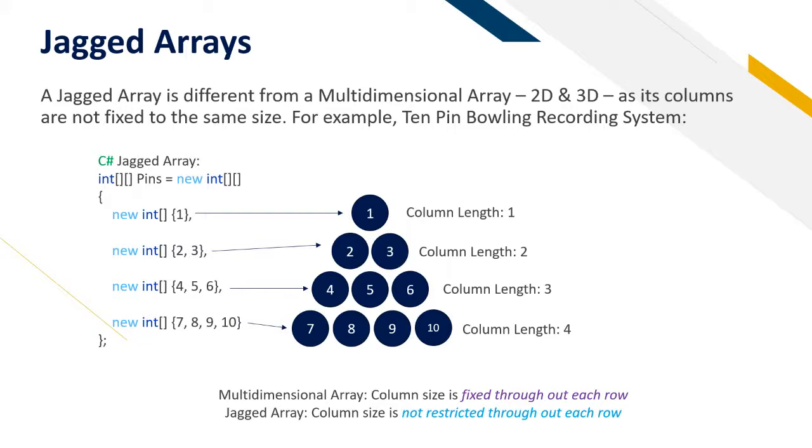A multi-dimensional array has a column size that is fixed throughout each row. So in a multi-dimensional array you can't have different sizes of column lengths because this is not how a multi-dimensional array works. But a jagged array is not restricted for how long each array is within its rows.